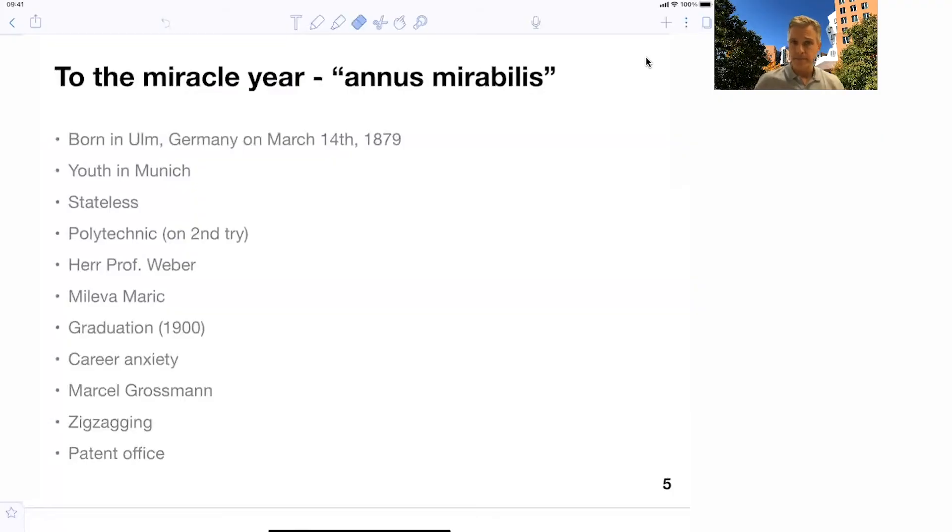While studying in Zurich, Einstein met his wife, Mileva Maric. She was also a physics student, one of the few female physics students there. And they fell in love and they married and they had children together.